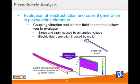Speaking of coupled analyses, JMeg can also run electrostriction in current-generated and piezoelectric elements. You can evaluate stress and strain induced by an applied voltage or measure the electric field generated by motion.